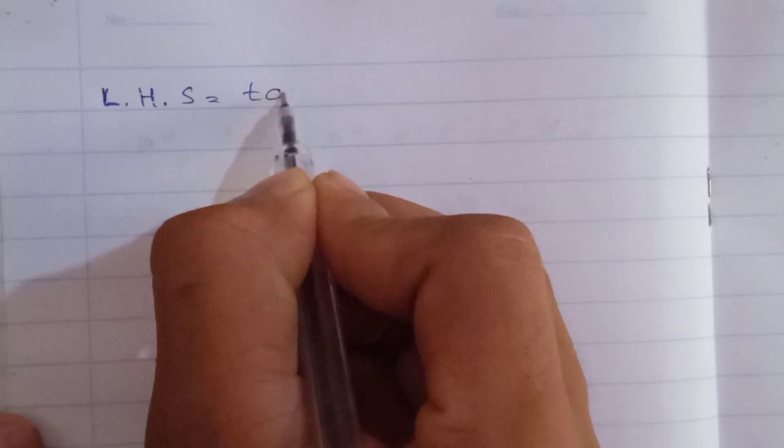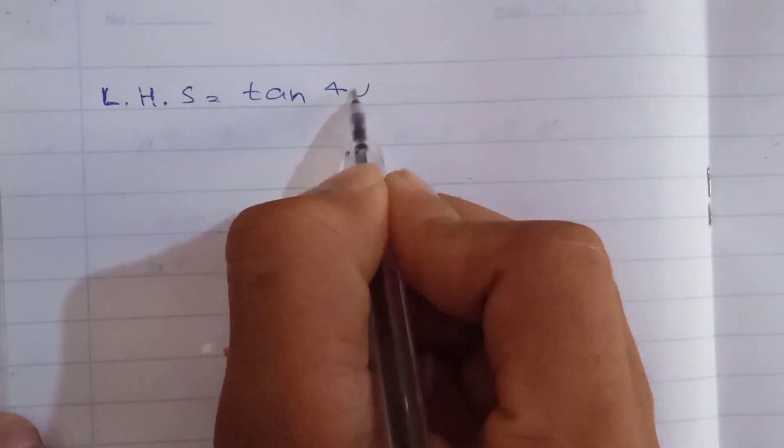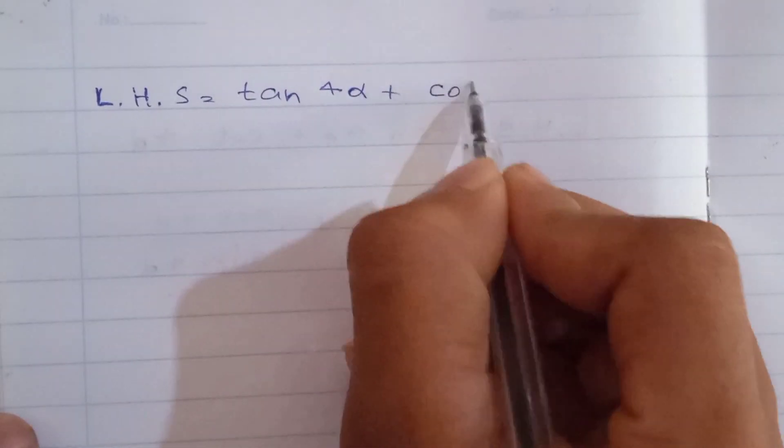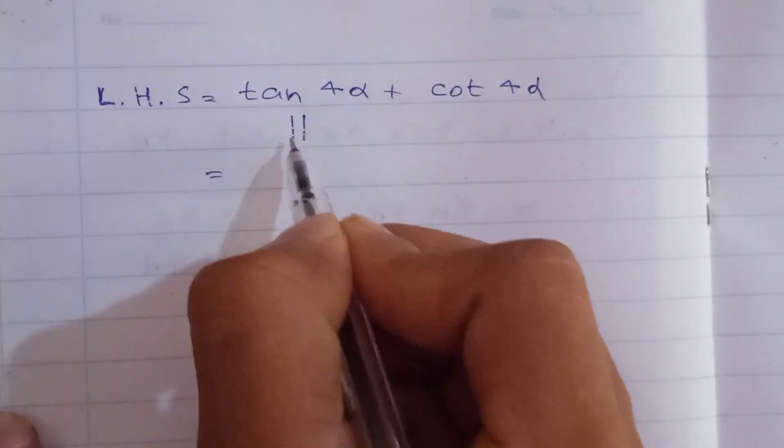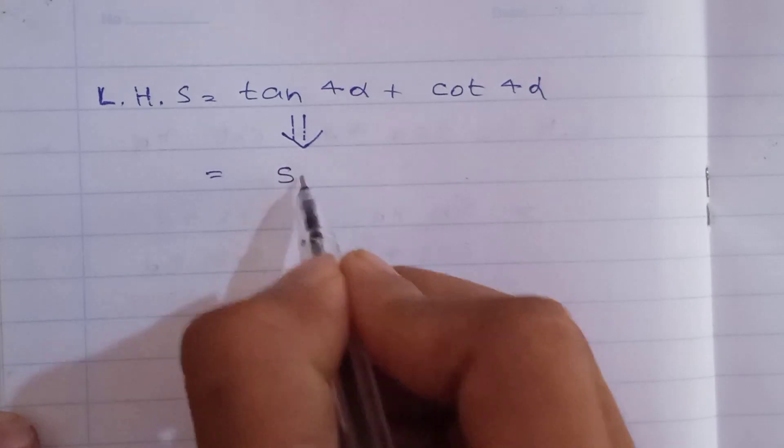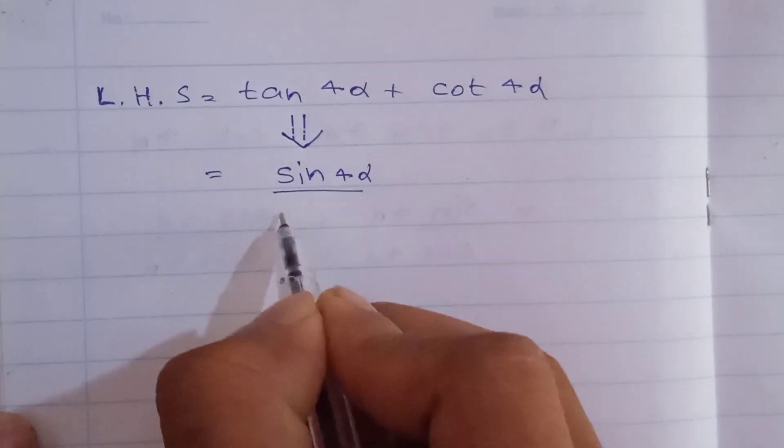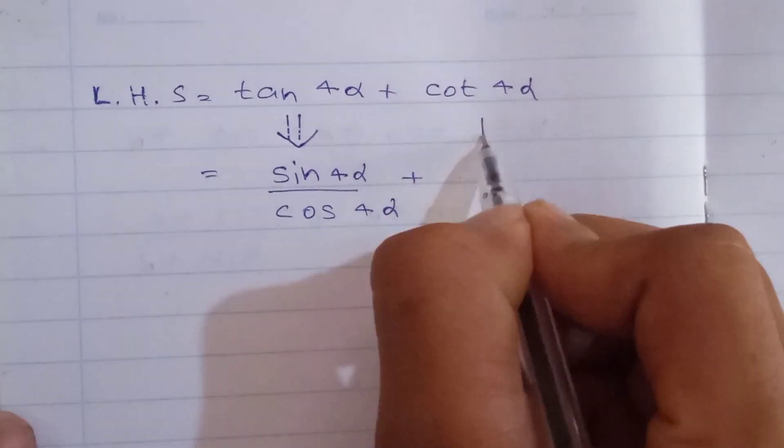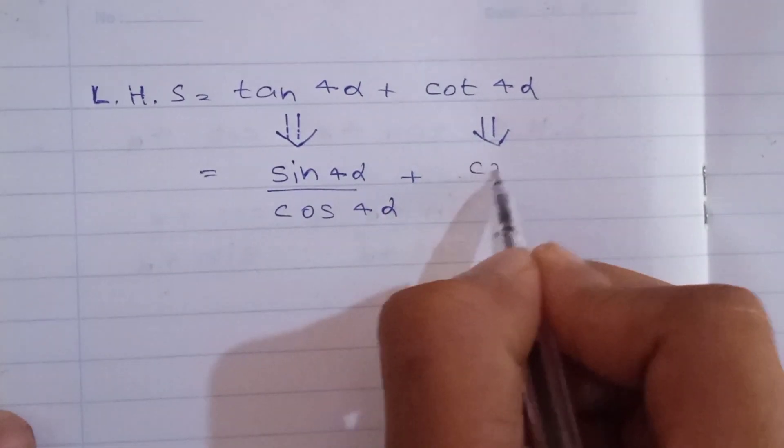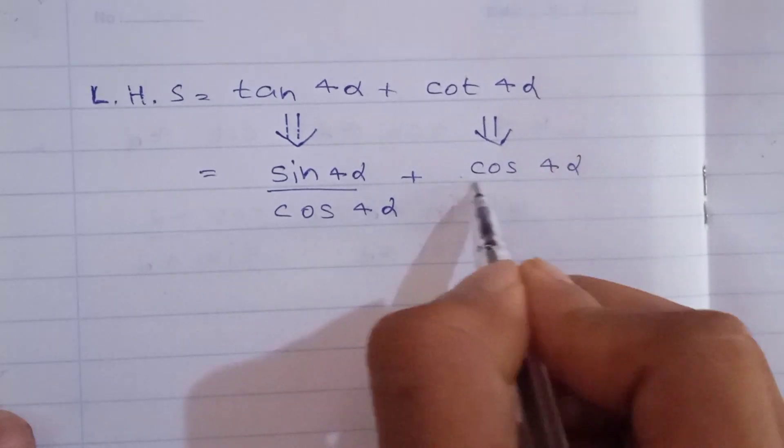First we can start with the left-hand side: tan 4α plus cot 4α. This equals sin 4α over cos 4α plus cos 4α over sin 4α.